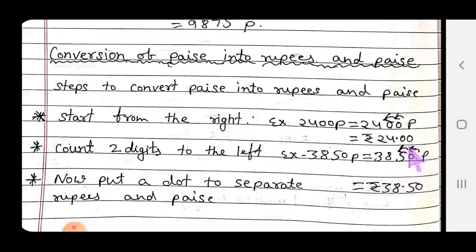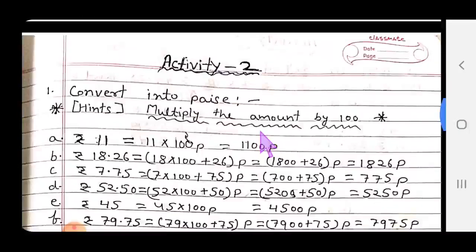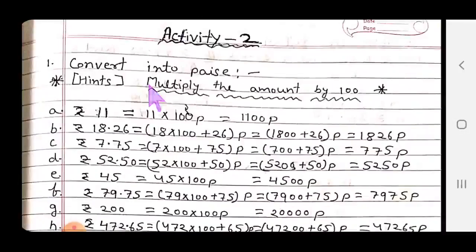Now activity 2 you have to do in your notebook. Convert into paise. Hints: multiply the amount by 100. Why multiply by 100? Because one rupee equals hundred paise. So whatever number is given, to convert to paise, multiply by hundred.